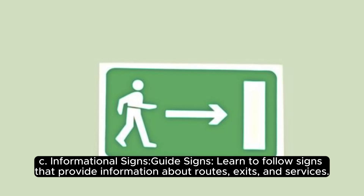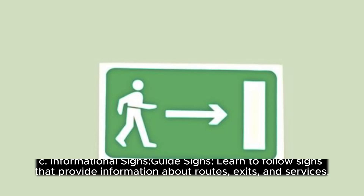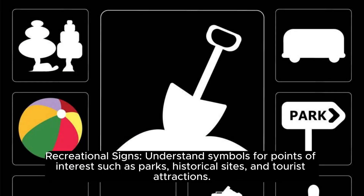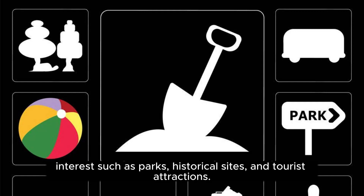Informational Signs. Guide Signs: Learn to follow signs that provide information about routes, exits, and services. Recreational Signs: Understand symbols for points of interest such as parks, historical sites, and tourist attractions.